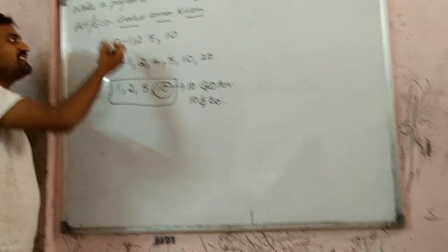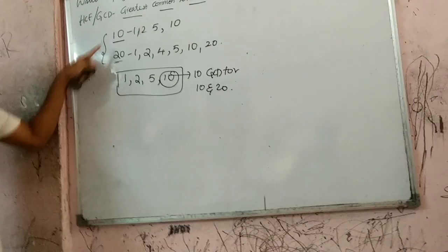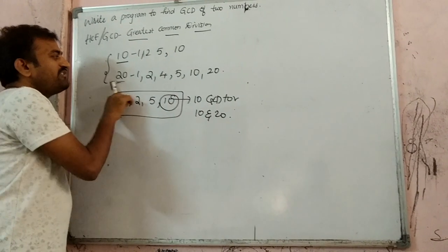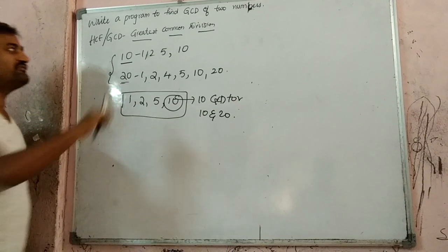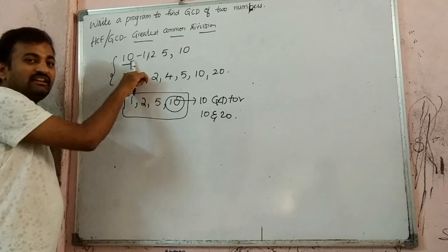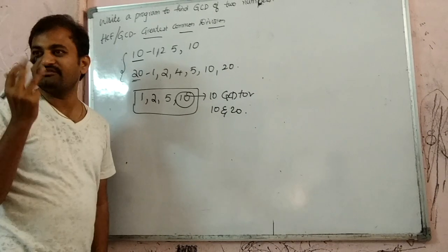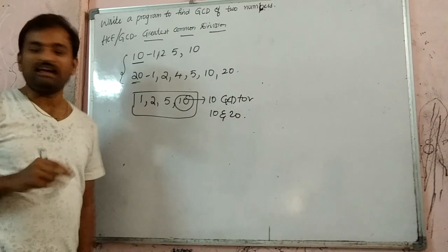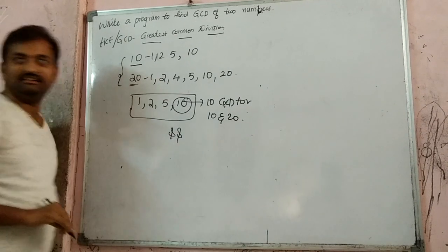So the concept is: we have to find the GCD. For finding GCD of two numbers — 10 and 20— first we need to find the factors of 10 and also the factors of 20. That means we need to use, at a time, what? The AND operator — that is, logical AND.